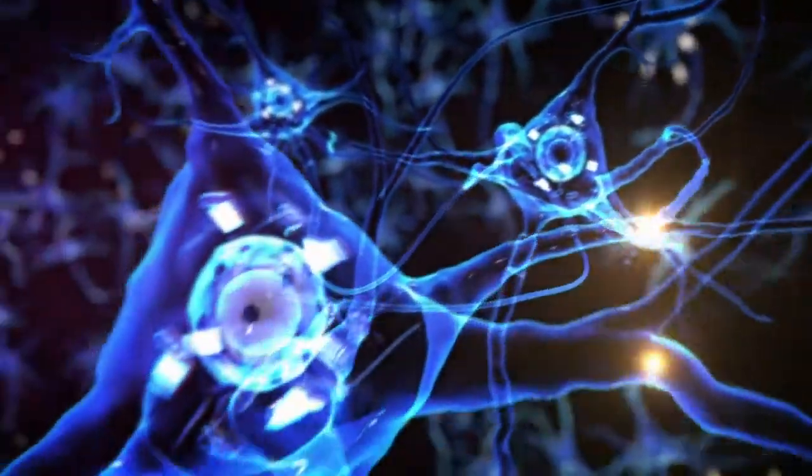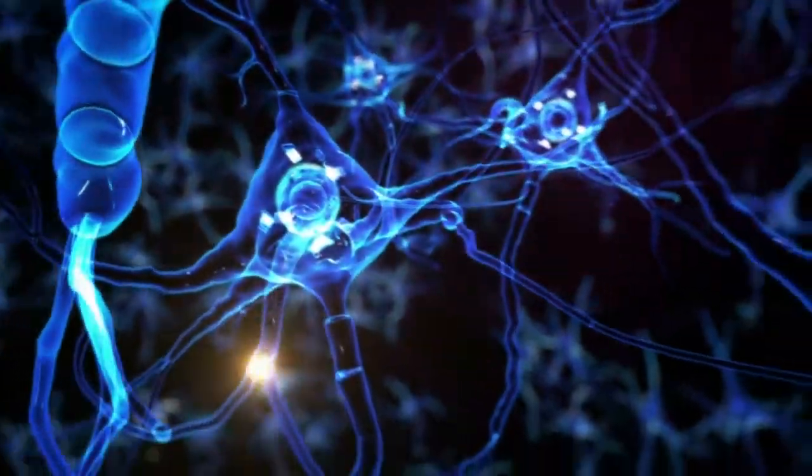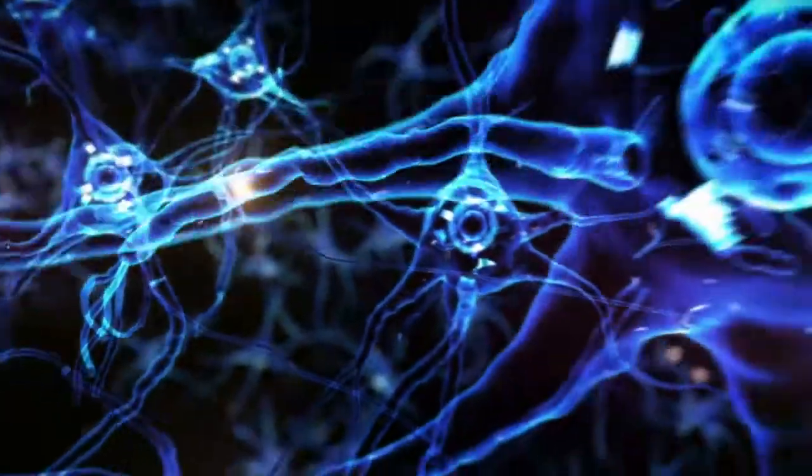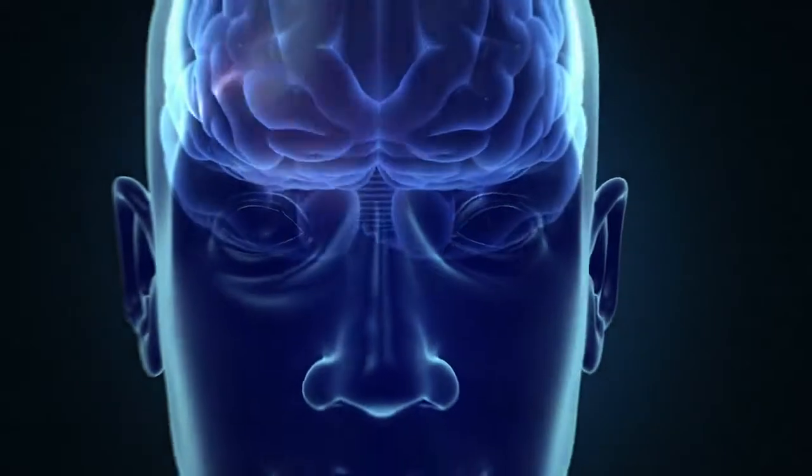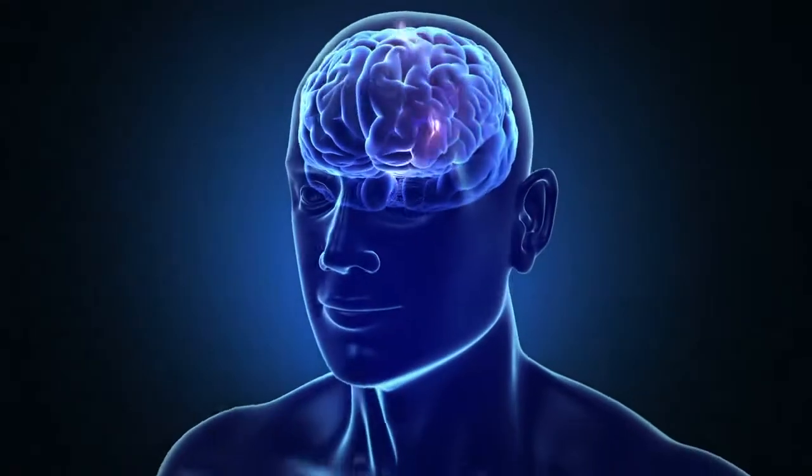Natural brains operate based on discrete voltage spikes which trigger neurotransmitters across synapses. The weightings are modified based on the timing of input spikes, which in turn modifies the synapse chemistry.